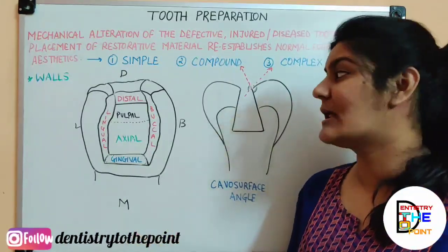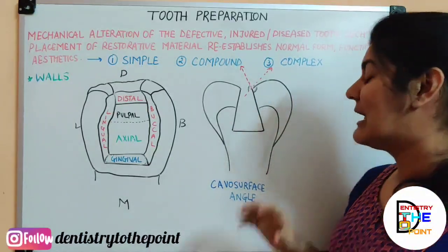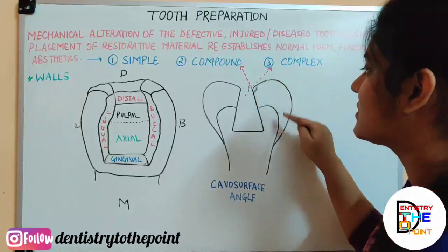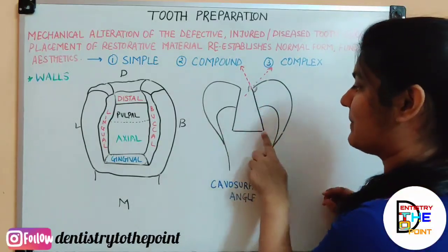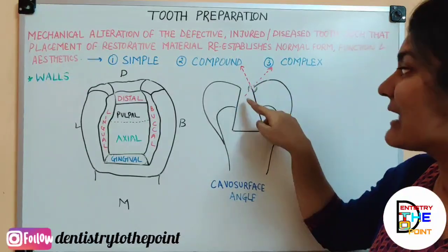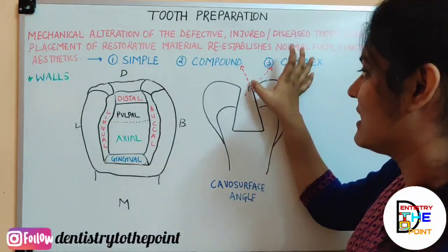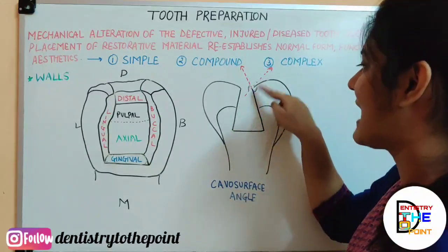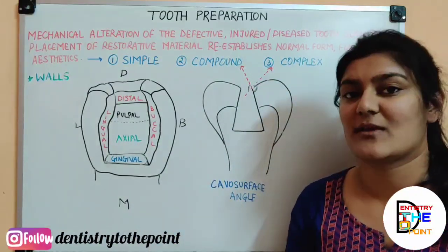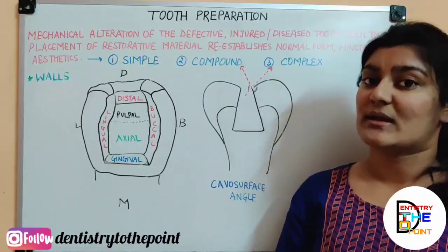Moving on to the next term: the cavosurface angle, or cavosurface margin. It is nothing but the junction where the prepared tooth surface and the external tooth surface meet. The angle formed at that junction — where the prepared tooth surface and the external tooth surface meet — is known as the cavosurface angle or cavosurface margin.